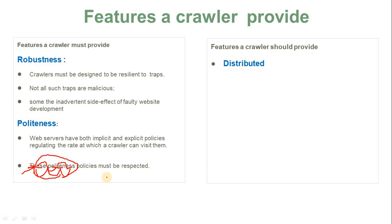The next feature is distributed. Whatever the web crawling process is, over the net there are millions of pages, and according to a user's query, we have to process and rank all those pages. So the basic process of web crawling should be distributed across multiple machines. After that, scalable — there are millions of pages and they will expand further, so the web crawler should scale accordingly with maximum utilization of available network bandwidth.